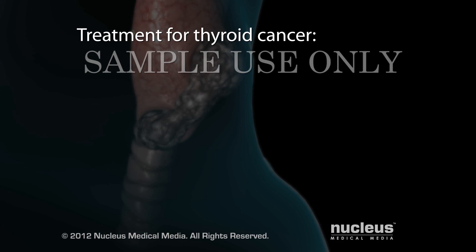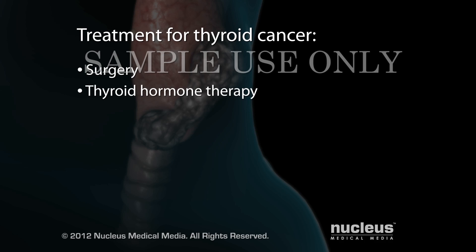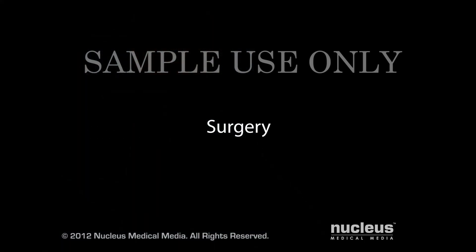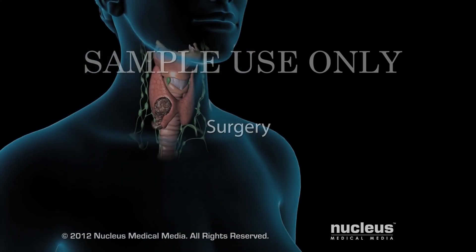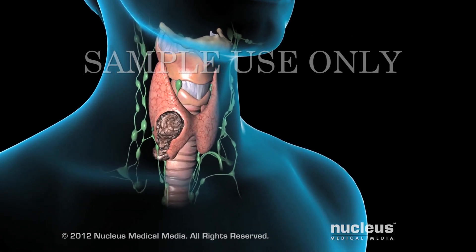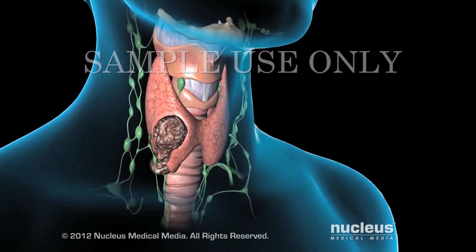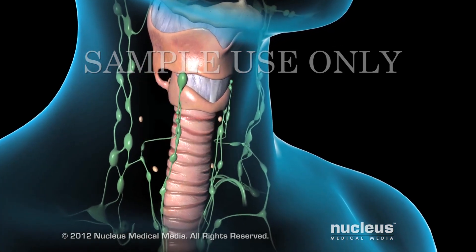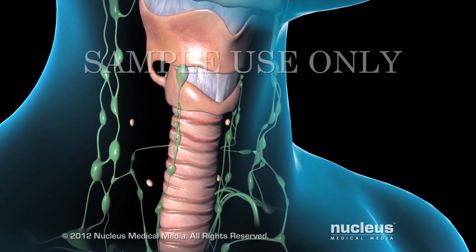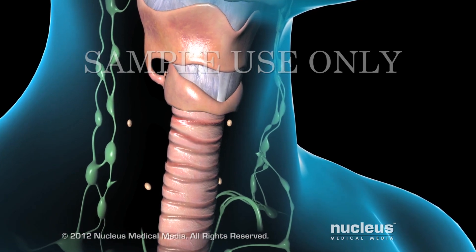To treat thyroid cancer, your doctor may recommend surgery followed by thyroid hormone therapy, radiation therapy, or chemotherapy. Surgery is the most common treatment for all types of thyroid cancer. If you have surgery, your doctor will usually remove your entire thyroid gland, and may remove nearby lymph nodes as well.